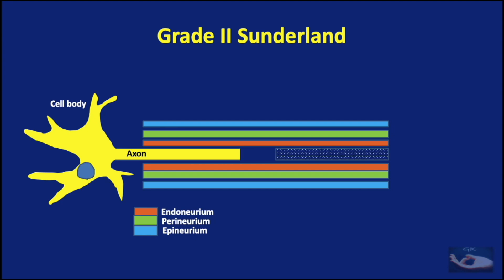Grade 2 injury in this classification represents damage to some axons only. Since the axon is damaged, distal Wallerian degeneration occurs. This grade corresponds to axonotmesis in the Seddon classification. Treatment is conservative, but regeneration of axons can be followed clinically by an advancing Tinel sign. Complete recovery can be expected over months.